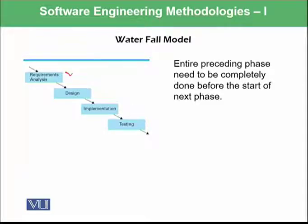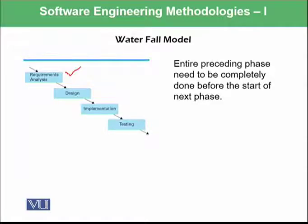This means first the requirement analysis needs to be finished, and once all requirements have been analyzed and the software requirements specification document has been prepared, then the software team will move towards the next phase which is design. During design, implementation, or testing, if any new issues or new demands are identified, there is no way back to the requirement analysis phase. All phases need to be done very strictly and sequentially.